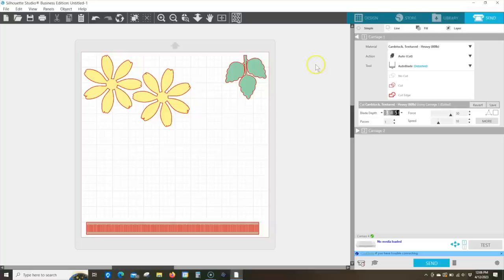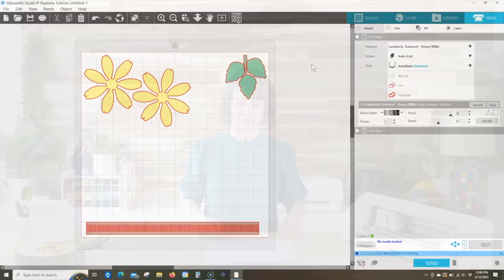So this is all set up. All I need to do now is to load my paper onto the mat, and load it into the machine, and then click Send.